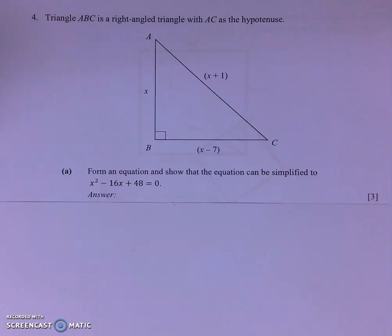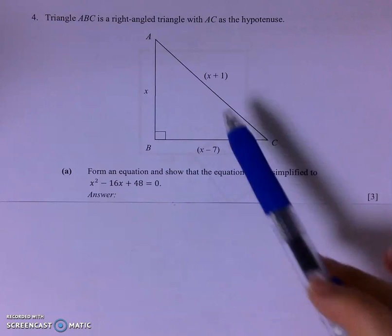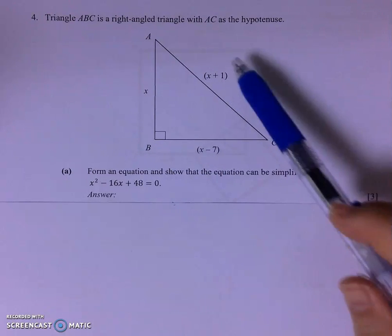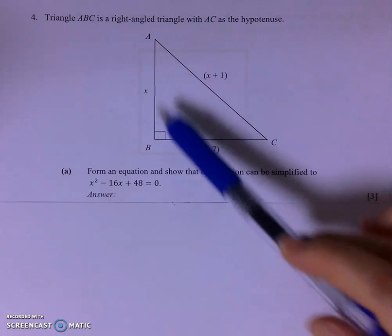Triangle ABC is a right-angled triangle with AC as the hypotenuse. We are given the length of the three sides of the triangle in terms of X.